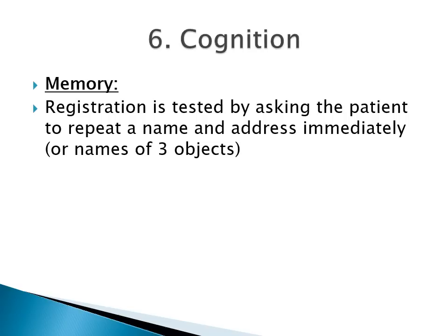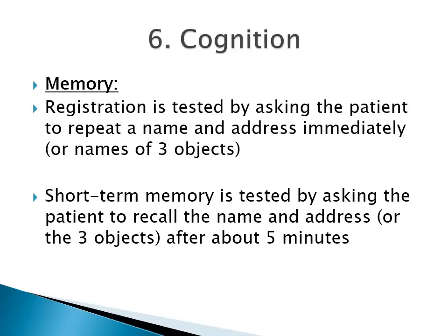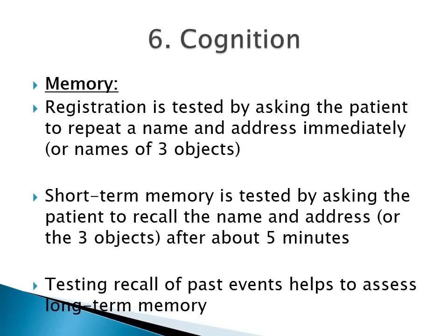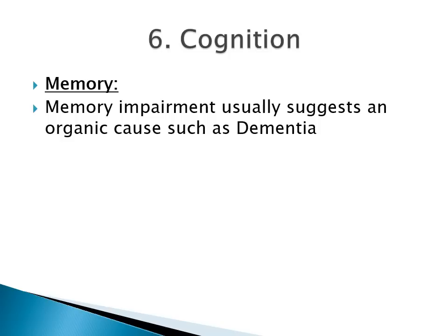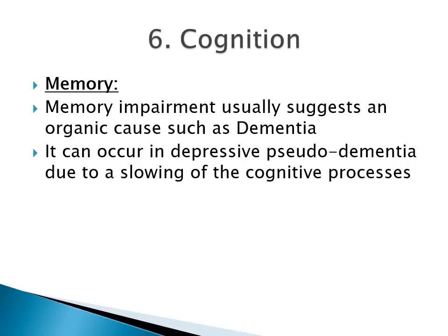Registration is tested by asking the patient to repeat a name and address immediately, or alternatively the names of three objects. Short-term memory is tested by asking the patient to recall the name and address or the three objects after about five minutes. Testing recall of past events helps to assess long-term memory. Memory impairment usually suggests an organic cause such as dementia, but it can occur in depression — where it is called depressive pseudodementia — due to a slowing of cognitive processes.